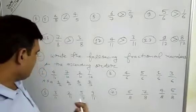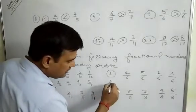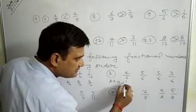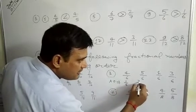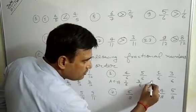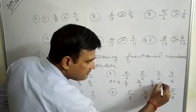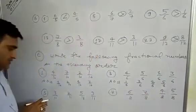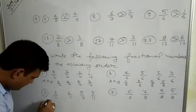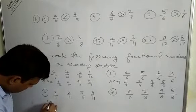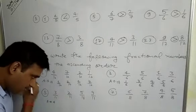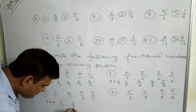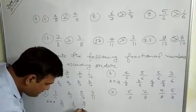In the next question, question 3, ascending order: first we write the smallest number, 1 by 6, then 3 by 6, then 4 by 6, then 5 by 6. In question 5, ascending order: first the smallest number, 2 by 11, then 3 by 11, then 5 by 11.